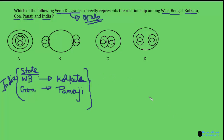Suppose this circle represents Kolkata, and let's take another circle representing West Bengal. I have drawn Kolkata inside West Bengal because Kolkata is in West Bengal. Along with Kolkata, there are other places like Durgapur and Kharagpur also in West Bengal, which may also be represented by such circles. So this circle represents Kolkata which is inside West Bengal.